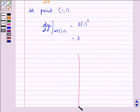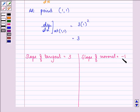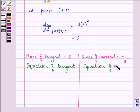This means we have slope of tangent as 3 and slope of normal will be minus 1 upon dy/dx, that is 3. Now with the help of these slopes, we can find out equation of both of them, equation of tangent as well as equation of normal.